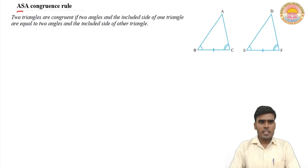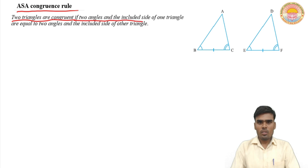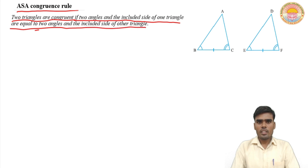Good morning students. In this second lecture, I am going to tell you about the ASA congruence rule. In the ASA congruence rule, two triangles are congruent if two angles and the included side of one triangle are equal to two angles and the included side of the other triangle.